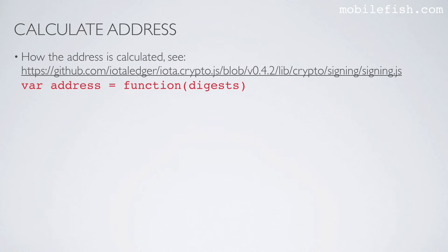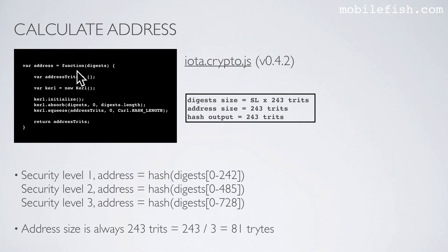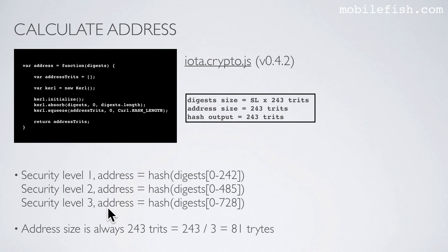This is the last step — we will now see how the address is calculated. The method can be found via the referenced link and function. This is the code to calculate the address, found in the iota.crypto.js library version 0.4.2. For security level 1, take the first 243 elements of the digest array and hash this value. For security level 2, take the first 486 elements of the digest array and hash it. For security level 3, take all the digest elements of the digest array and hash it.